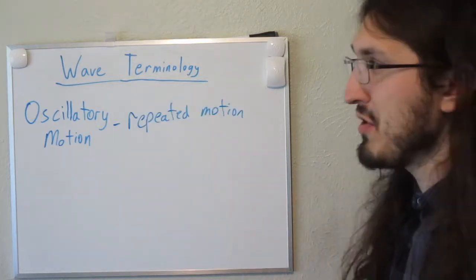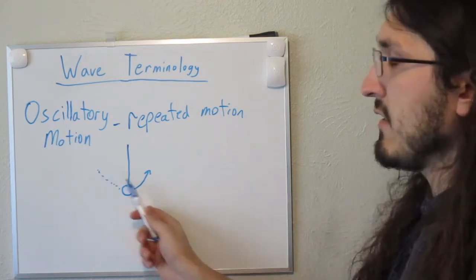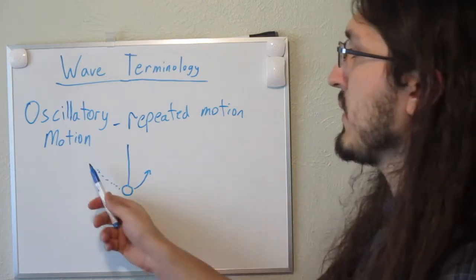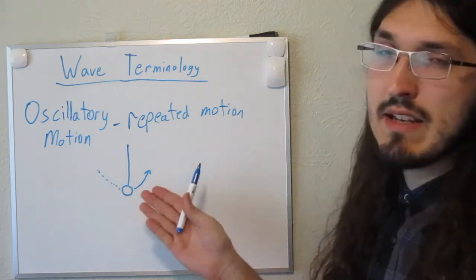A good example of oscillatory motion is like a pendulum. A pendulum swings back and forth and if there's minimal air resistance it will keep on swinging in that way repeatedly. And we can say that that pendulum is oscillating.